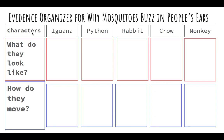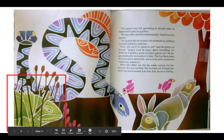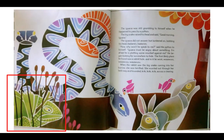Now, we're going to collect evidence for our evidence organizer for Why Mosquitoes Buzz in People's Ears. We have our different characters in our story — we're only going to talk about these: the iguana, the python, the rabbit, the crow, and the monkey. First, we're going to start with the iguana and figure out what they look like. Let's come to the page and check out the iguana. Miss G wrote: he's green, he has sticks in his ears, and he's short — because he looks much smaller next to the snake.